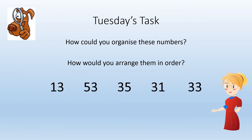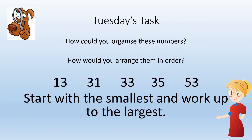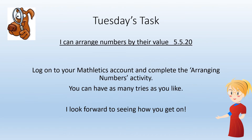How about these numbers? Starting with the smallest again and working up to the largest, these would be 13, 31, 33, 35 and 53. For your task today you need to log on to your Mathletics account and complete the arranging numbers activity. It will look similar to the ones that you've just been doing. You can have as many tries as you like. I look forward to seeing how you get on.